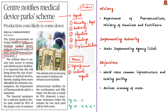The first point is that this particular scheme comes under the Department of Pharmaceuticals, which comes under the Ministry of Chemicals and Fertilizers. The second point is that this scheme is implemented by the state implementing agency, meaning a separate organization is responsible for implementation in different states.